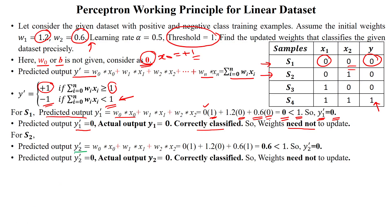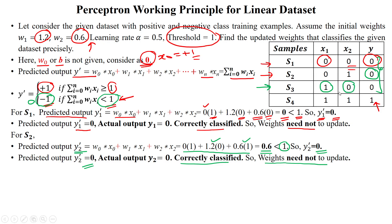For sample number 2, substituting the values w0*x0 + w1*x1 + w2*x2 gives 0.6. Comparing with the threshold: 0.6 is less than 1, so the predicted output y2' is 0. We use 0 instead of -1 because our actual output uses 0 for the negative class. The predicted output is 0 and the actual output is also 0 — both are matching, so the sample is correctly classified. No weight update needed.